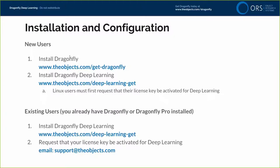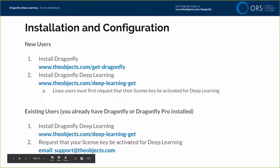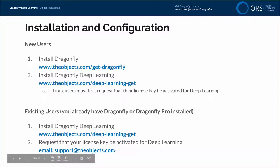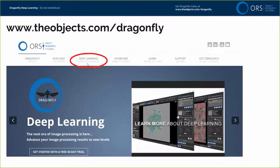For new users, you'll need to install Dragonfly by filling out the form at theobjects.com/getDragonfly, which sends you a download link. Then you'll need to install the Deep Learning add-on. For existing users, you already have Dragonfly or Dragonfly Pro installed but will need to install Deep Learning and request your license key be activated for Deep Learning — either an evaluation key or a permanent key if purchasing.